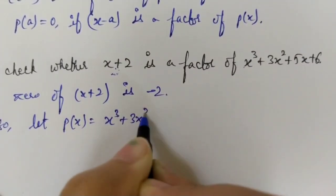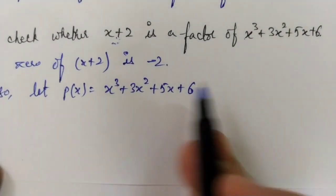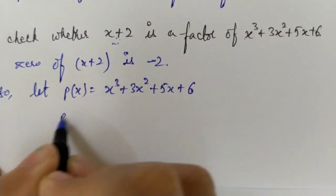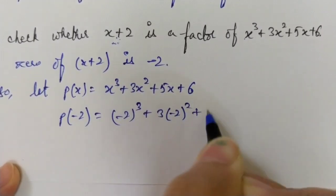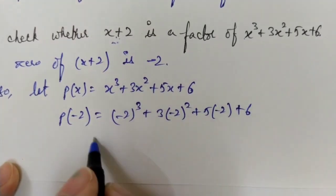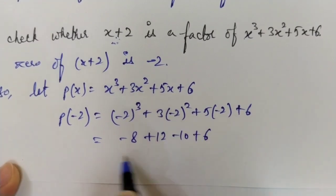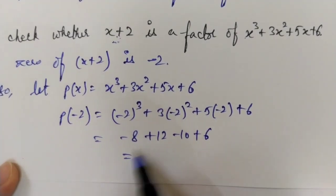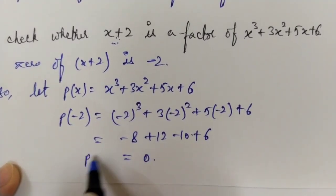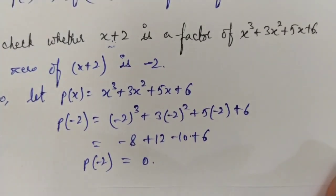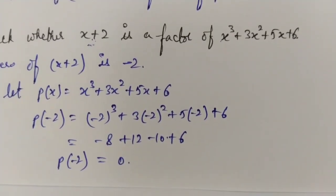Let p(x) equal the given polynomial. Then p(−2) equals (−2)³ plus 3(−2)² plus 5(−2) plus 6, which gives minus 8 plus 12 minus 10 plus 6. Solving this: minus 8 plus 12 is 4, minus 10 is minus 6, plus 6 gives zero. So p(−2) equals zero.